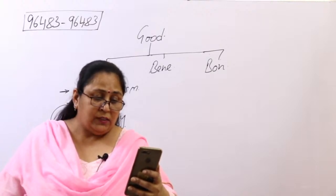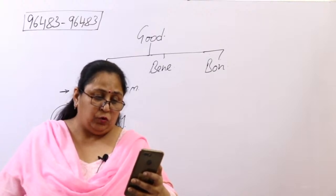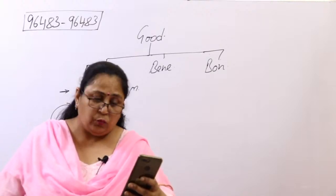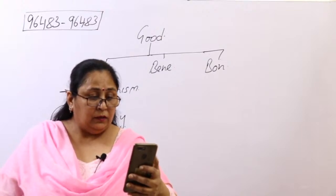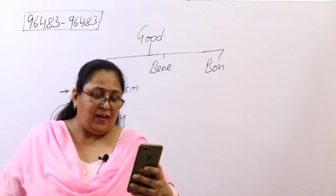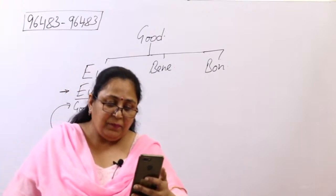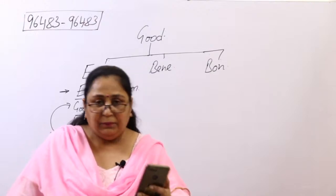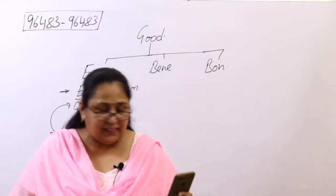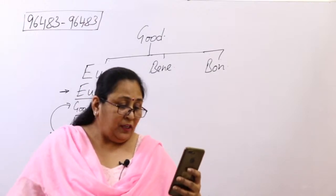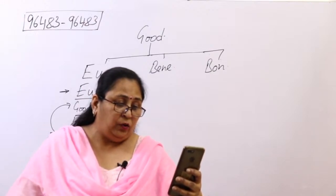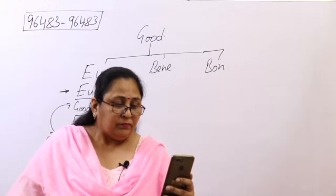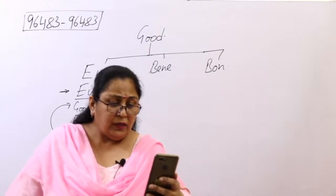A student has suggested 'eulogy' and another has suggested 'euthanasia.' Euthanasia is a very good word from the 'eu' root. Eu means good and thanatos means death, so euthanasia literally means a good or peaceful death — it refers to the practice of ending someone's life to relieve suffering.